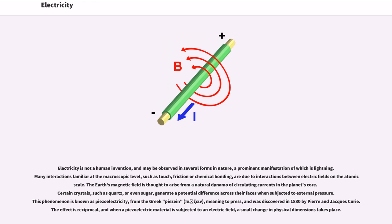Electricity is not a human invention, and may be observed in several forms in nature, a prominent manifestation of which is lightning. Many interactions familiar at the macroscopic level, such as touch, friction or chemical bonding, are due to interactions between electric fields on the atomic scale. The Earth's magnetic field is thought to arise from a natural dynamo of circulating currents in the planet's core. Certain crystals, such as quartz or even sugar, generate a potential difference across their faces when subjected to external pressure. This phenomenon is known as piezoelectricity, from the Greek piezein meaning 'to press,' and was discovered in 1880 by Pierre and Jacques Curie. The effect is reciprocal, and when a piezoelectric material is subjected to an electric field, a small change in physical dimensions takes place.